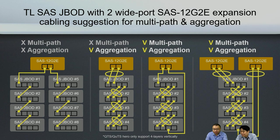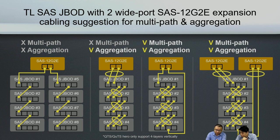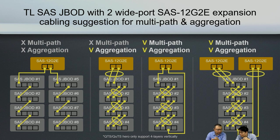A better way is to connect the second port to the far end of the SAS J-Bar — that way you get both multi-pass for failover and performance enhancement through aggregation. The best setup on the right uses two SAS 12G2E cards with all four ports, connected with four cables for maximum performance and failover protection. This is our most recommended setup, especially in data centers, where most customers use aggregation and multipath together.